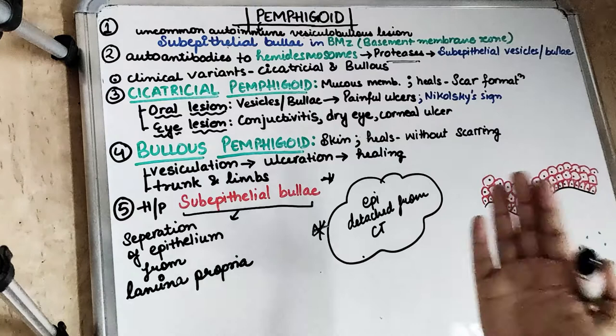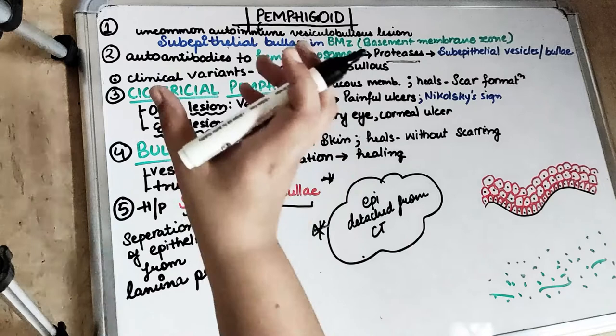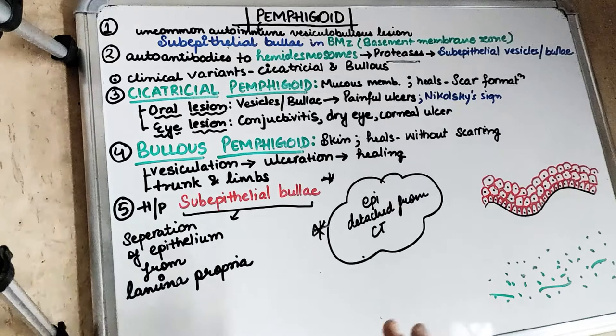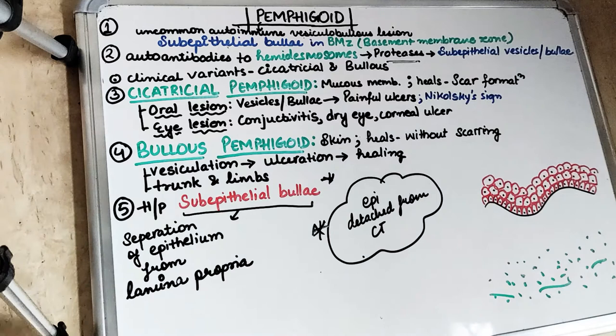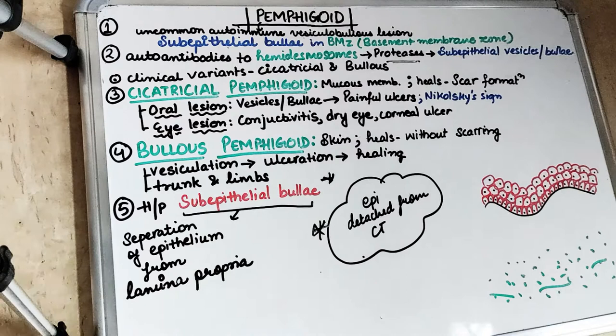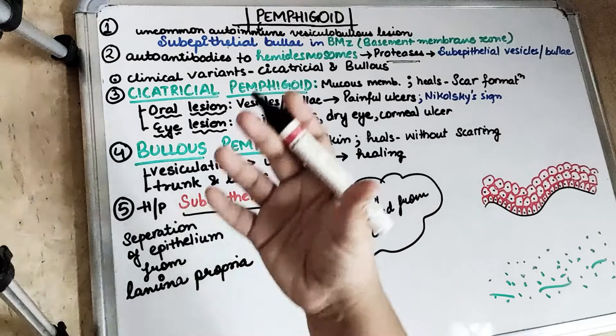Cicatricial pemphigoid heals by scar formation and involves mostly the mucous membrane — including the oral tissues and mucous membrane of the eye. Oral lesions are initially slow-progressing, with mild erosion or desquamation of the gingival tissues. Vesicles or bullae arise from mucosal areas, rupture, and form large painful eroded ulcers. The patient complains of discomfort and pain, and there may be desquamative gingivitis if the gingiva is involved.